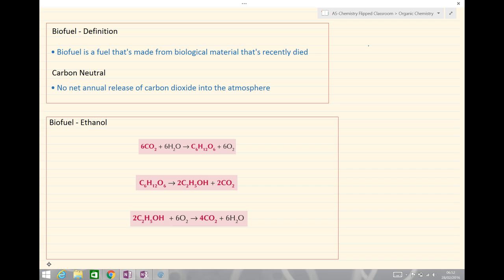Carbon neutral is something where there is no net annual release of carbon dioxide into the atmosphere. That's an important distinction because you could say fossil fuels have no net release of carbon dioxide, but they have a release time of over millions of years. They only absorb carbon dioxide millions of years ago and then release it in a short period of time, so their annual release is into the atmosphere.